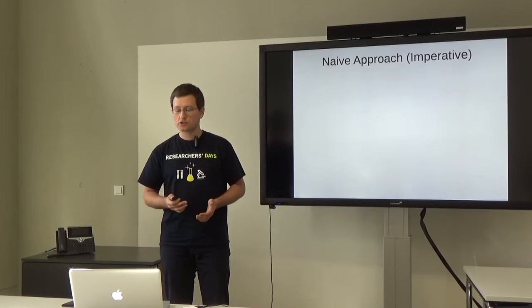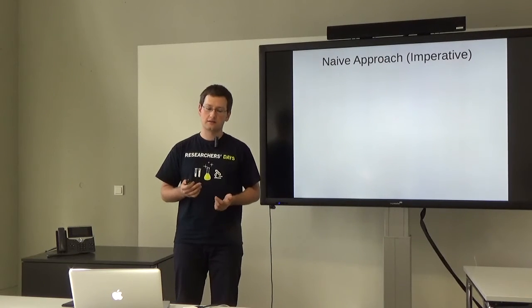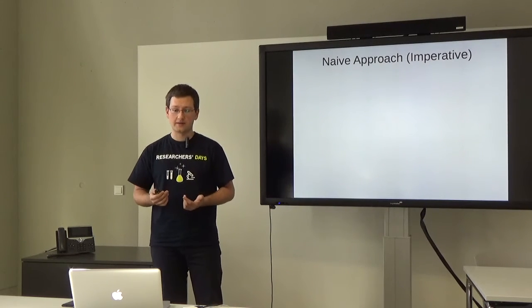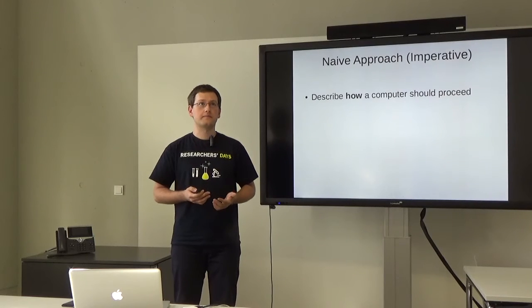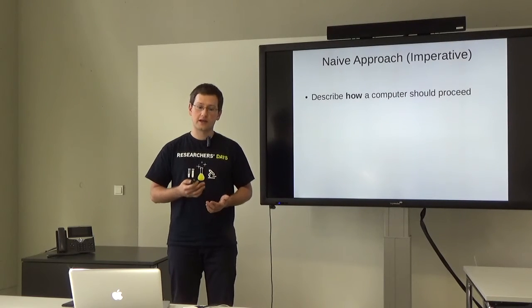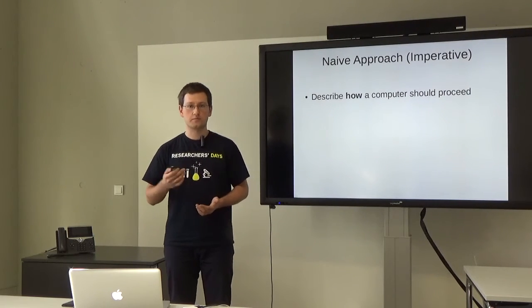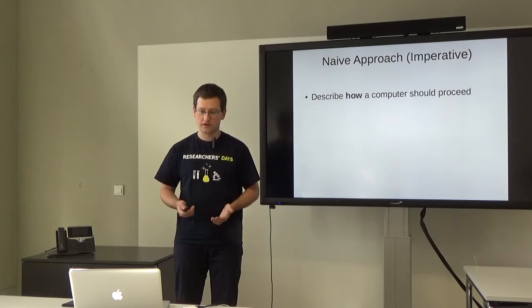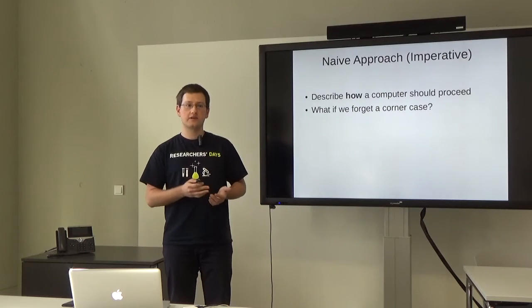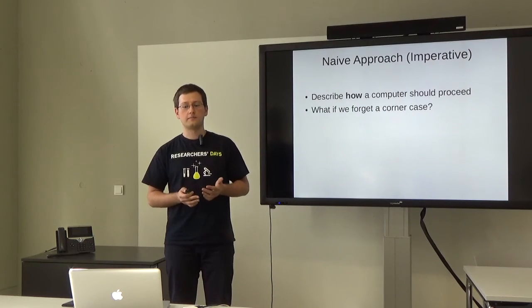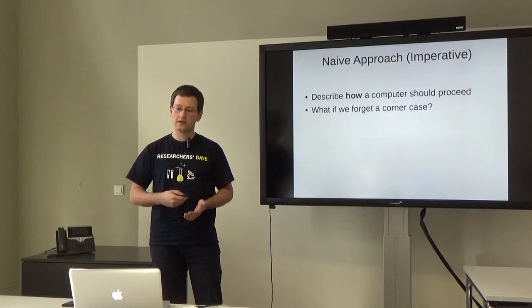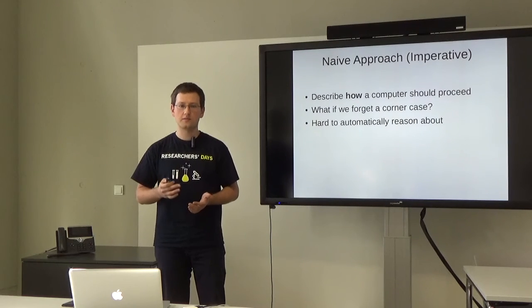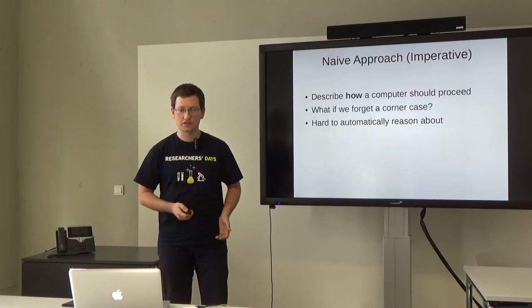A naive approach to modeling financial domain in computer languages is what is called an imperative paradigm. An imperative paradigm is the model of language where we describe how a computer should proceed. What exactly a computer should do to calculate what we want it to calculate. But it is very easy to forget some corner case. It is very easy to do something wrong. And it turns out that for computers, it is rather hard to automatically reason about programs that are written using an imperative language.